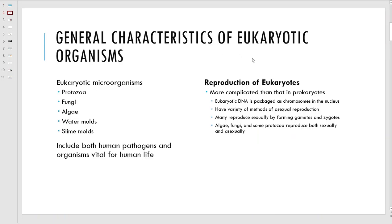General characteristics of the eukaryotes: we've got protozoans, fungi, algae, and water and slime molds. Some of these guys are pathogens, some of them are necessary, just like in the bacteria.